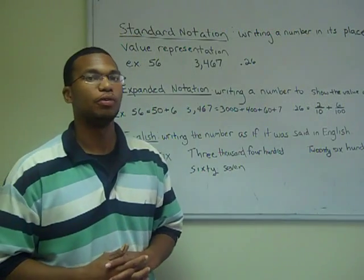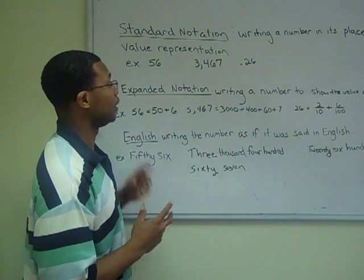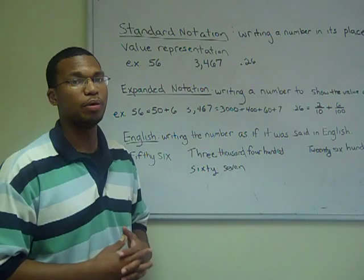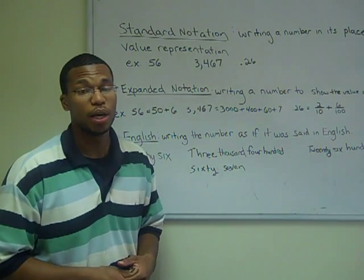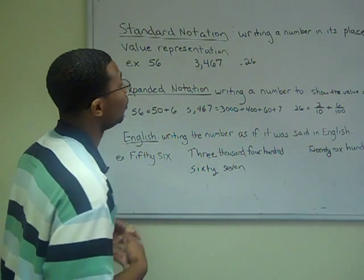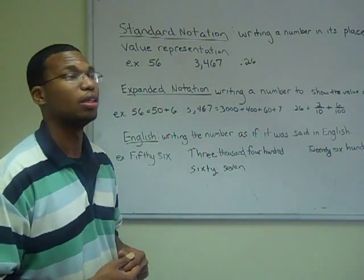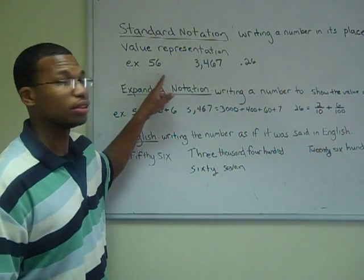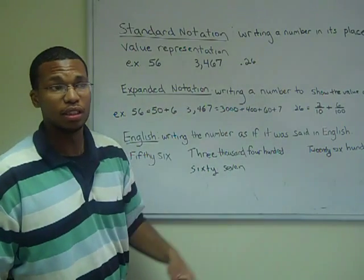There are three ways to represent real numbers. The two most popular ones of the three are standard notation and in English. Standard notation is the way we represent numbers on an everyday basis. English is the way we represent numbers as if we are writing a check. Standard notation involves writing a number and its place value representation. Some examples of standard notation would be the number 56, 3,467, and 26 hundredths.